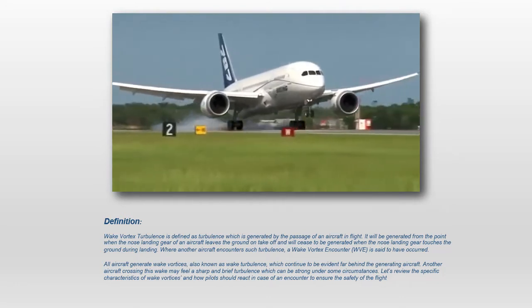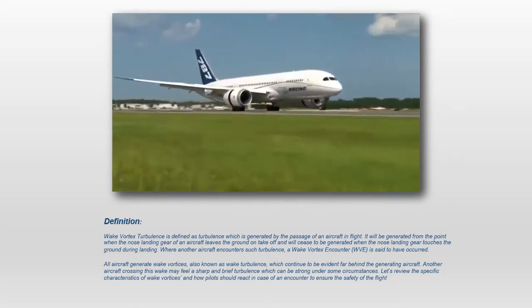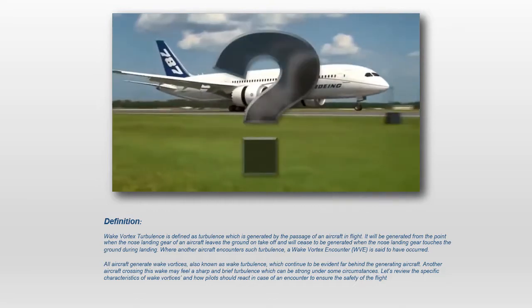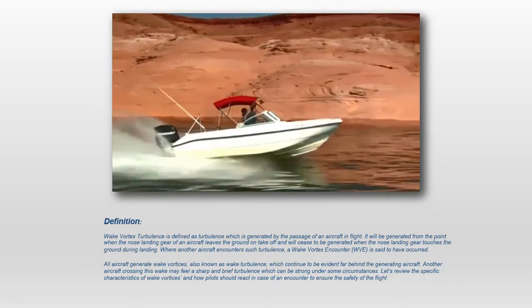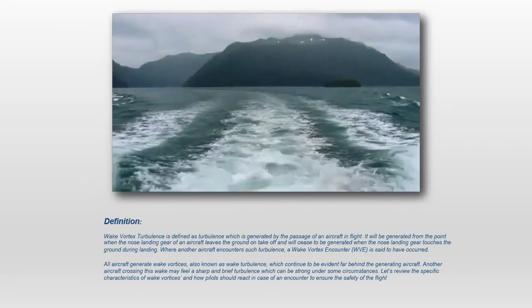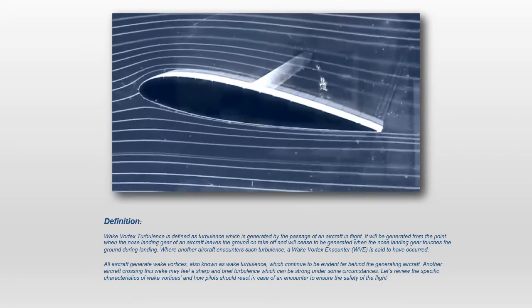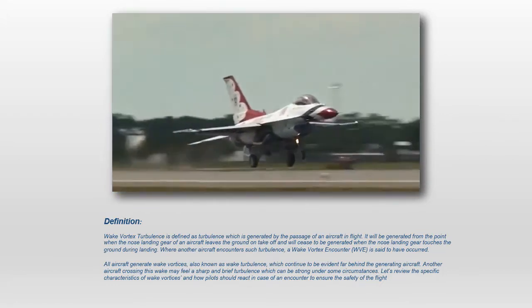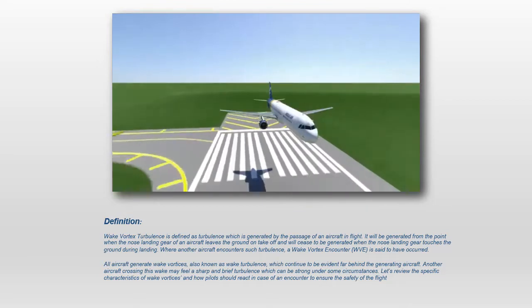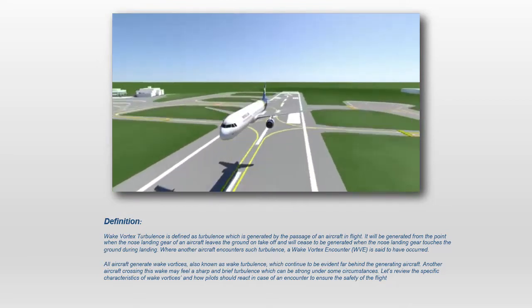Every airplane creates wake turbulence and proper precautions must be taken to avoid encountering wake turbulence. So what is wake turbulence? If you have ever seen a speedboat, you have probably noticed the wake or waves it leaves behind in the water as it speeds by. Like water, air is also a fluid and as airplanes fly through the air, they also create a wake. This wake creates a stream of turbulence behind the airplane that is generated by the wingtips.